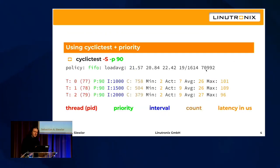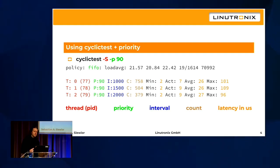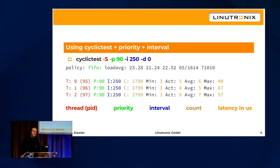You can change the priority from the defaults, where cyclictest competes with every other task on the system, to RT priority, so it's preferred over every other task. This can be tuned further to an interval of only 250 microseconds on every CPU.